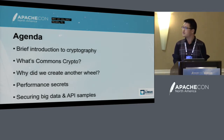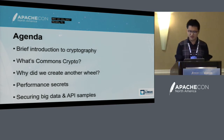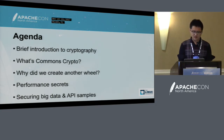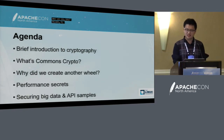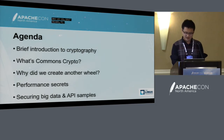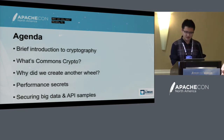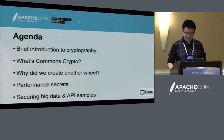Here is the agenda of this talk. First of all, before we discuss crypto, it's better to take a look at cryptography. Then we will talk about what is Commons Crypto and why we created such a library. After that, I will try to go a bit deeper and talk about the performance secret. Lastly, I will show you how Commons Crypto is securing big data and some API examples.